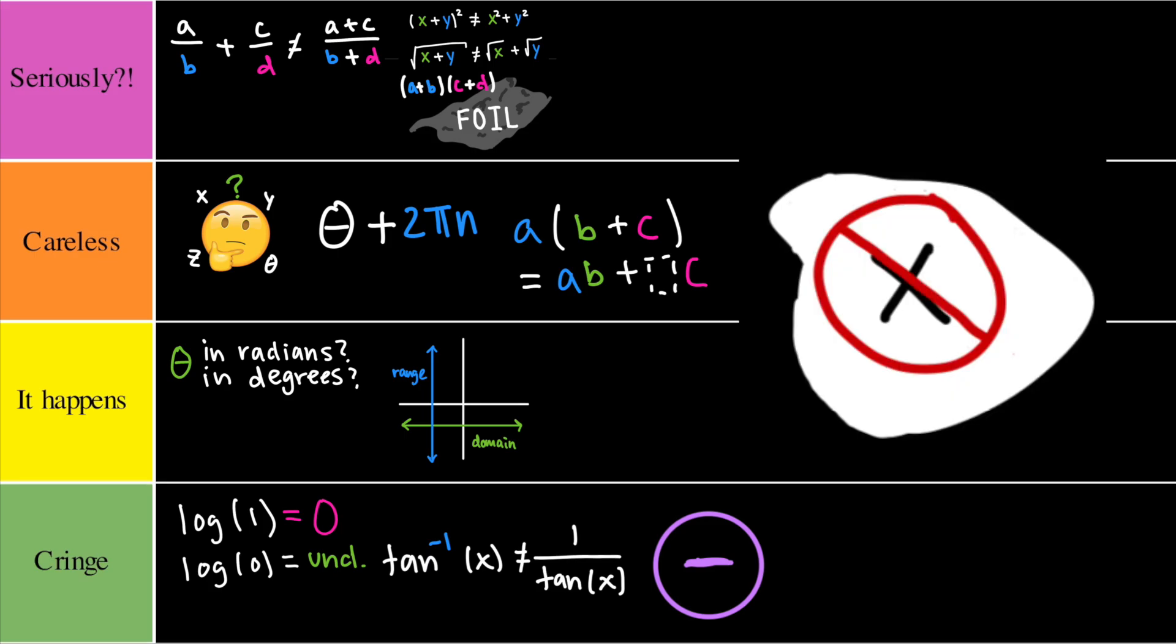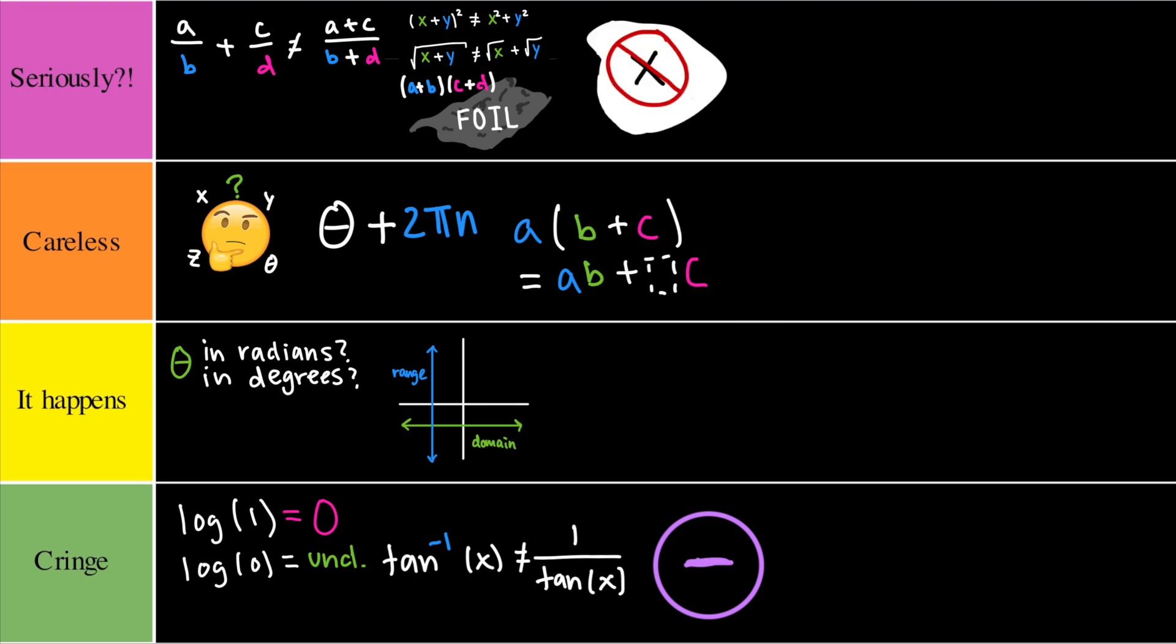Next we have wanting to cancel out all of the x's out of habit. Being a serial canceler or someone who cancels out variables without considering context, such as forgetting x is not equal to 0, or misapplying the operation entirely can often lead to nonsensical results. Therefore I would have to put this in a seriously category because it has to do with a misunderstanding of algebra.